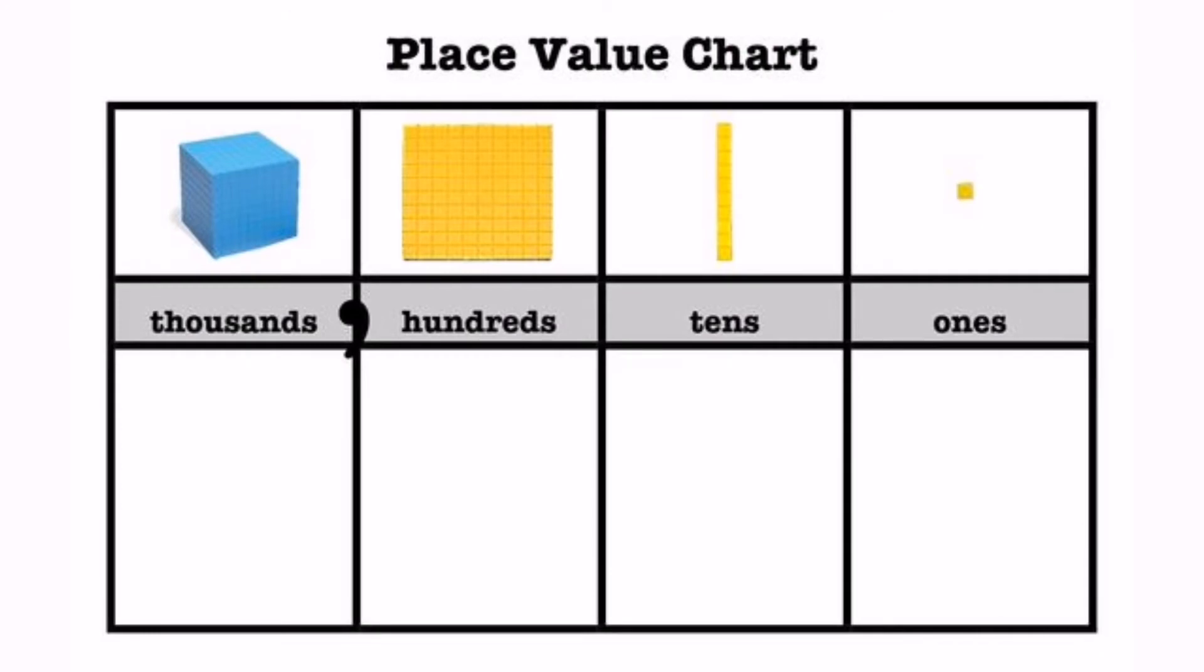Next, we look at this place value chart. Cube, the value is 1,000. Flat, the value is 100. Long, the value is 10. And the last one is short, the value is ones.